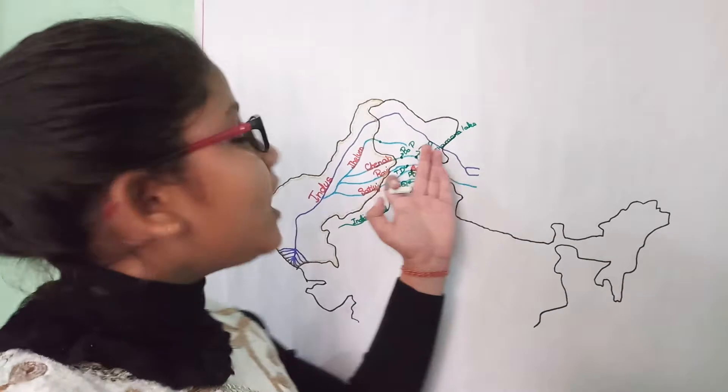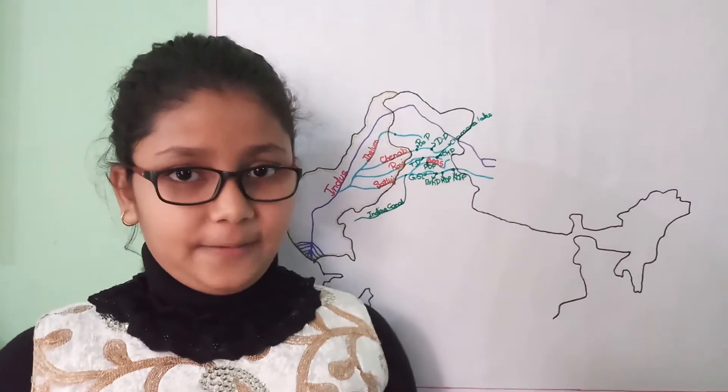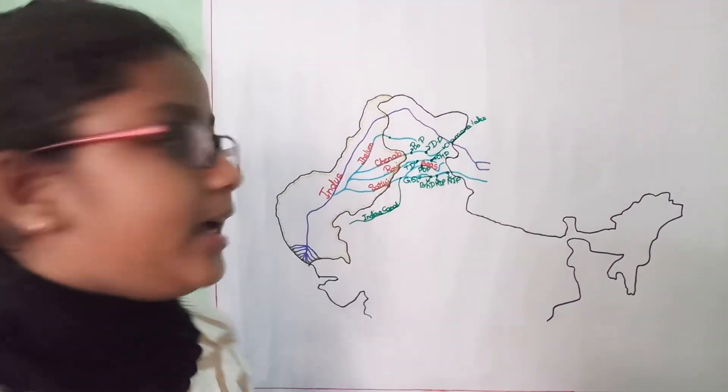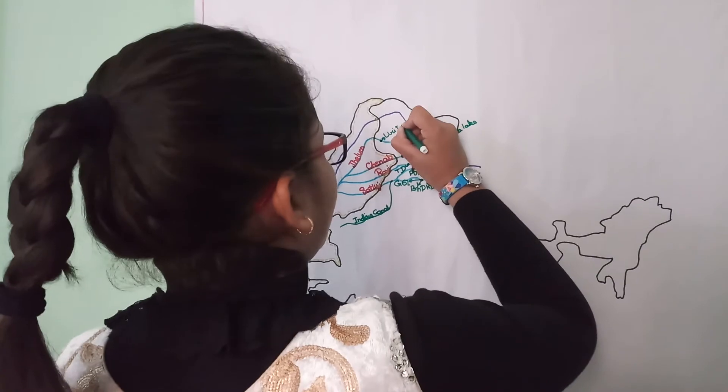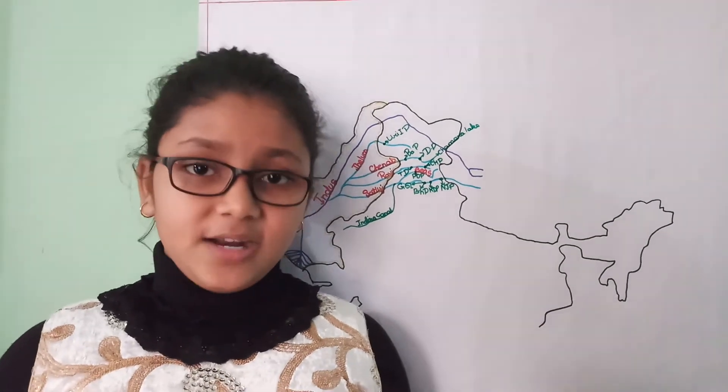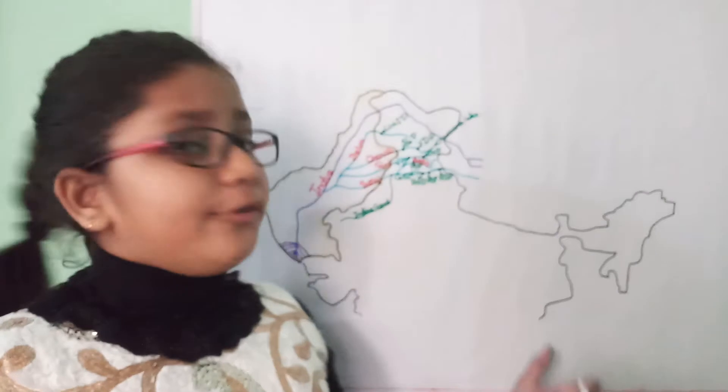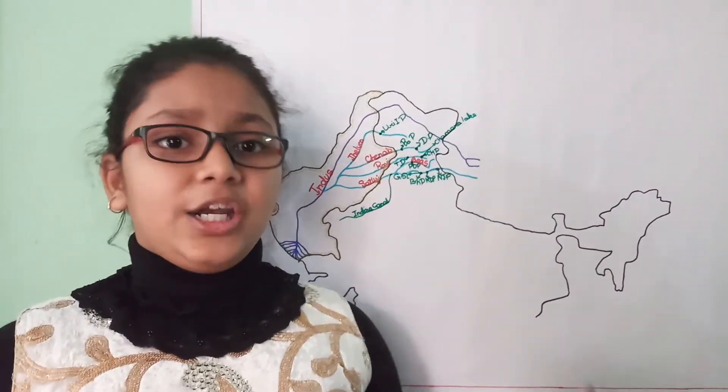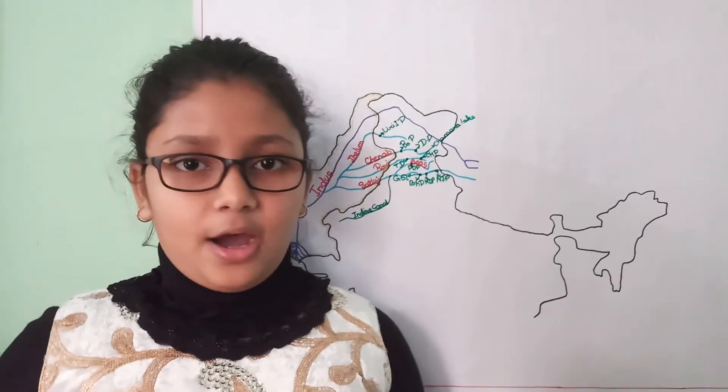So now comes the Jhelum River. On the Jhelum River, we have the Uri Project. We can also call it the Uri 1 Project. It is built on the Jhelum River in Jammu and Kashmir, and its total power capacity is 480 MW. And on 4th July 2014, a new dam Uri 2 was inaugurated, which has the capacity of 240 MW.